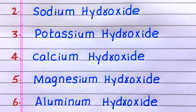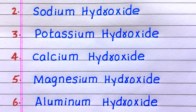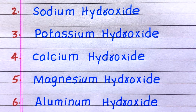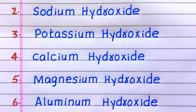Second example of a base is sodium hydroxide. Third: potassium hydroxide. Fourth: calcium hydroxide. Fifth: magnesium hydroxide. Sixth: aluminum hydroxide.